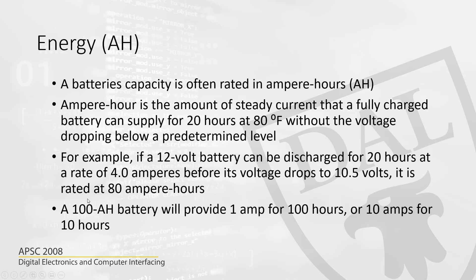Here is another example: a 100 ampere hour battery will provide one ampere of current for 100 hours, or 10 amperes for 10 hours, or 100 amperes for one hour. That is ampere hours and how you can use it for energy calculations.